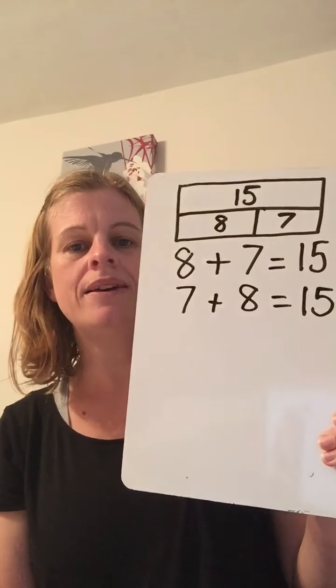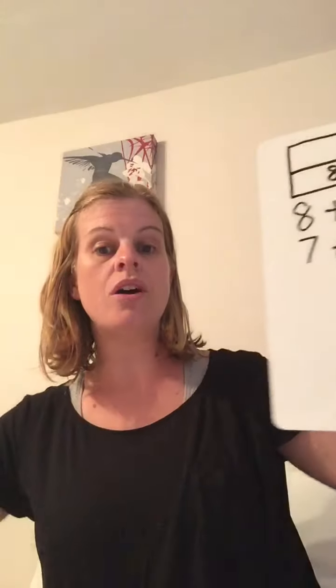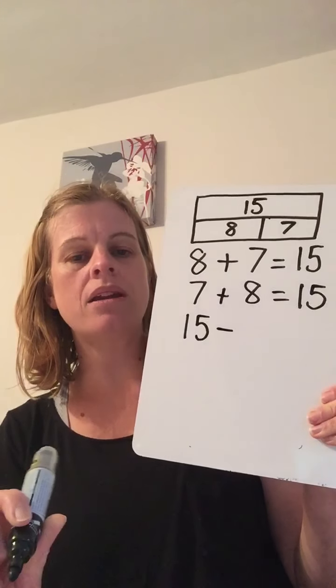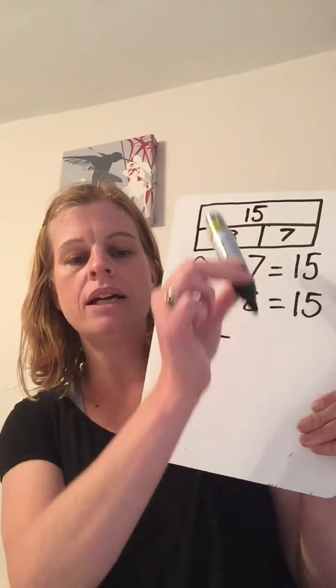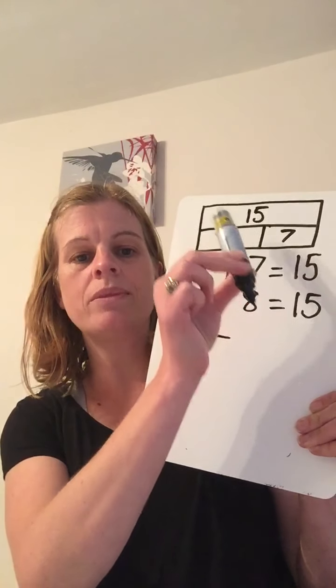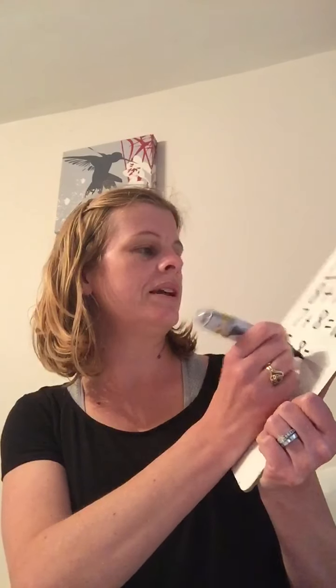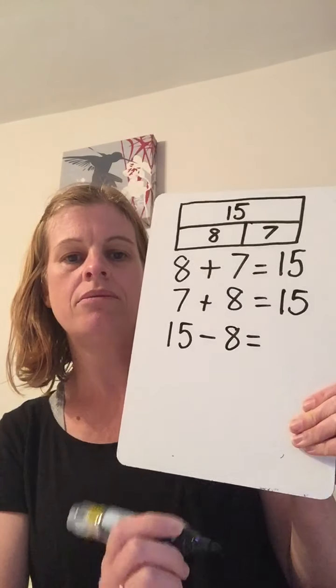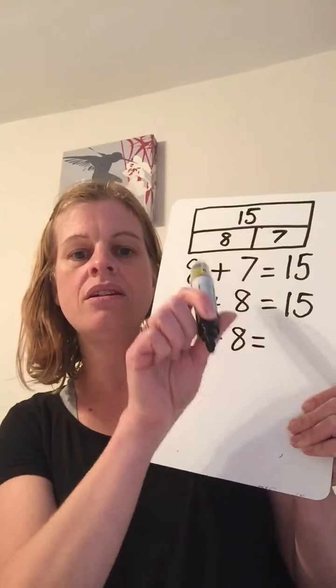Can I do some subtraction calculations? With subtraction, you start with your whole. So I'm going to start with 15. I'm going to subtract one of my parts. So 15 is my whole, I'm going to subtract 8. And what am I going to be left with? I'm going to be left with 7, because I know 8 and 7 make 15.